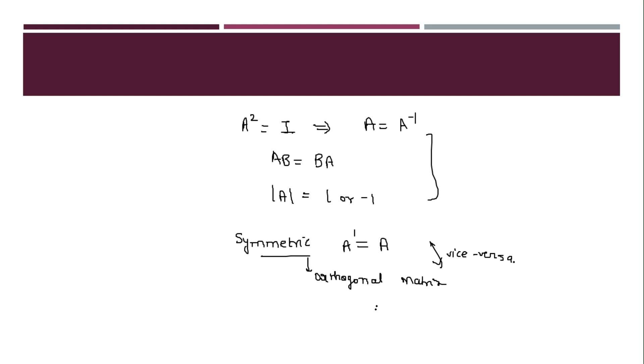Another property is that there is a relationship between idempotent and involuntary matrix. If you have a matrix A as involuntary matrix, the relation is half B plus I, where B is idempotent matrix. This is the relation between an involuntary and idempotent matrix.